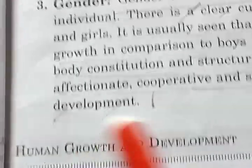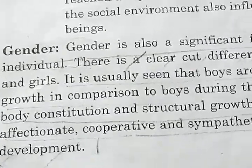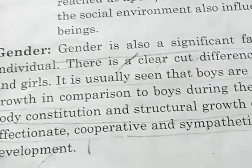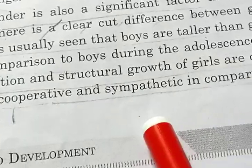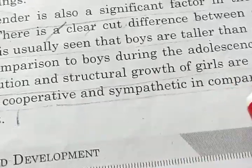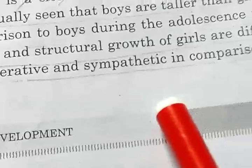Girls are more affectionate, cooperative and sympathetic in comparison to boys in terms of social development. Girls are generally very affectionate, cooperative, and sympathetic to others rather than boys.